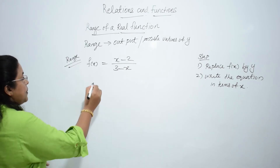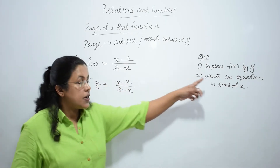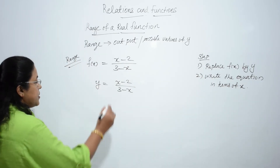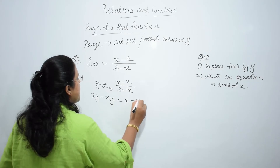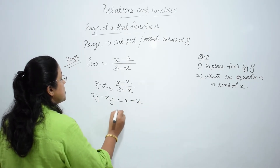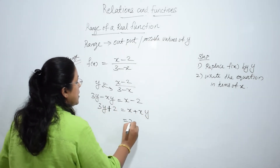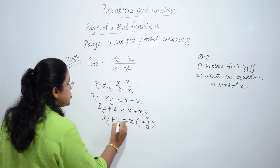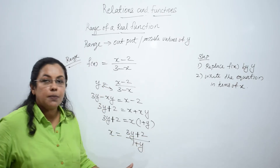First, replace f(x) by y: y = (x - 2)/(3 - x). Second step, write the equation in terms of x. Cross multiply: 3y - xy = x - 2. Group x to one side: x + xy = 3y - 2. Take x common: x(1 + y) = 3y - 2. So x = (3y - 2)/(1 + y). This is the meaning of the second step.